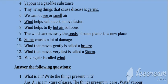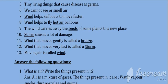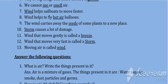Answer the following questions. What is air? Write the things present in it. Answer: Air is a mixture of gases. The things present in it are water vapor, smoke, dust particles, and germs.